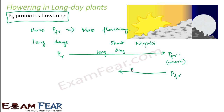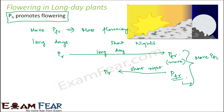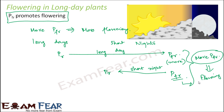After the long day, Pfr gets only a very short night, so there is not enough time for all the Pfr to convert back to Pr. Not all of the Pfr converts, so you are left with more Pfr at the end of the full day cycle. Since Pfr promotes flowering in long day plants, more Pfr means flowering takes place. The logic is quite simple, and this explains why different plants flower in different seasons.